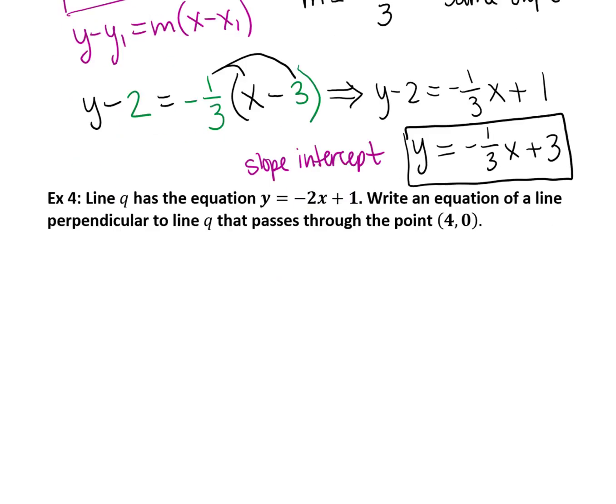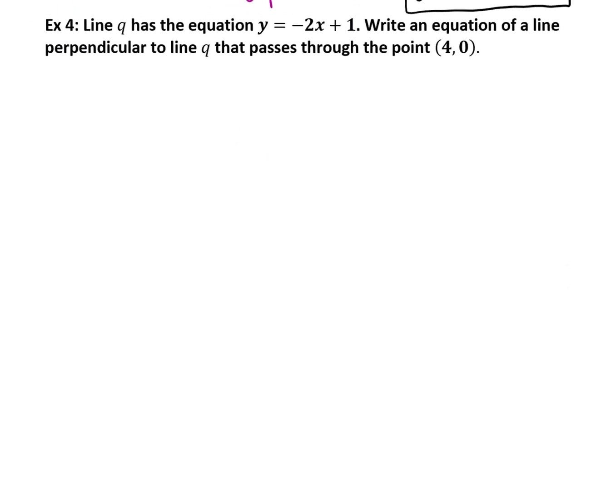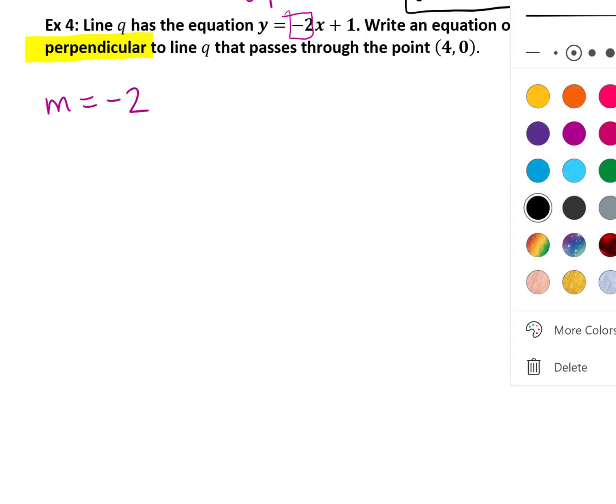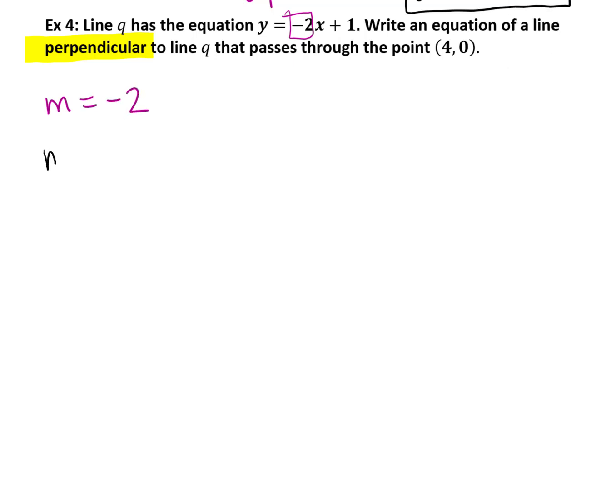All right, in this last example, we're given the equation of line q, and we need to write an equation of a line perpendicular to line q passing through the point (4, 0). Notice the slope of line q is negative 2. We know that because it's written in slope-intercept form. So the perpendicular slope would be one-half, because that's the opposite sign reciprocal.